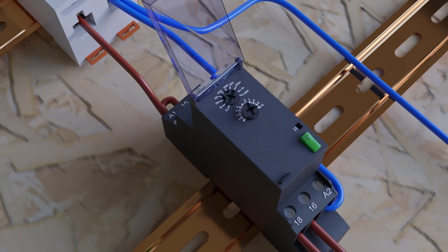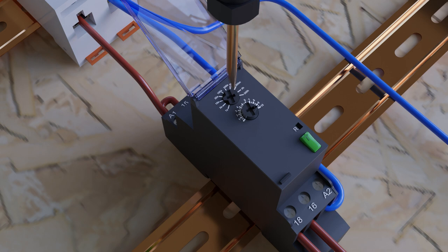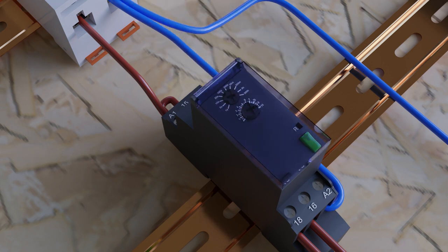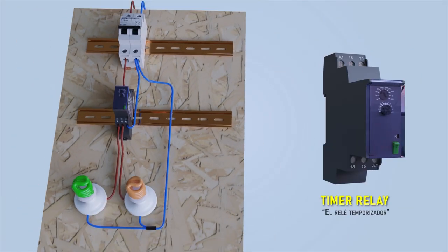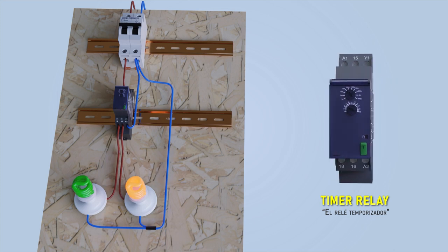A timer is a device that allows us to adjust the connection or disconnection time of an electrical circuit after an order is generated. These devices are widely used in industry and automation.